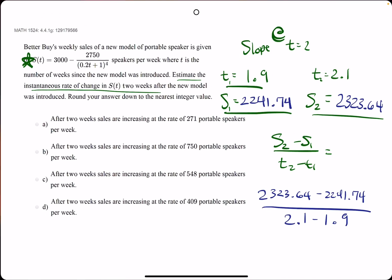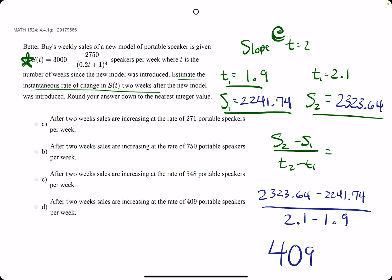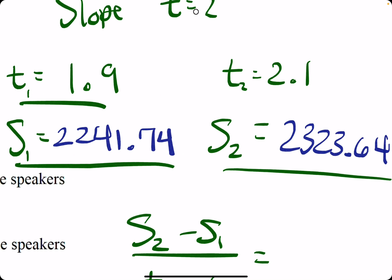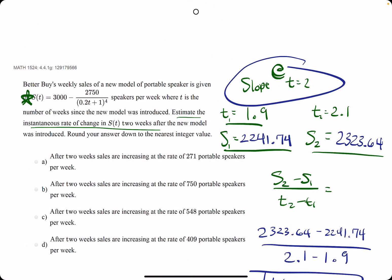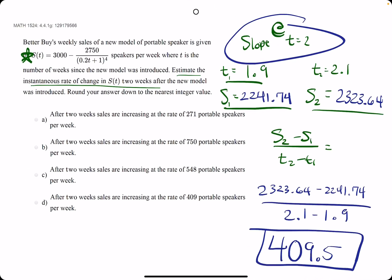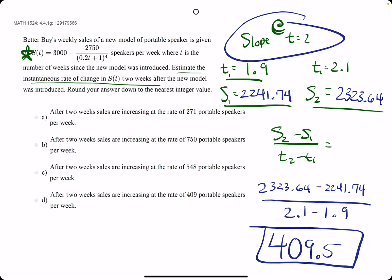409.5. A nice value. 409.5 is the rate of change, or the slope, between 1.9 and 2.1, which is a great estimate for the slope at 2. So, 409. We see increasing at a rate of 409. Break out the eraser. And d is our best answer.